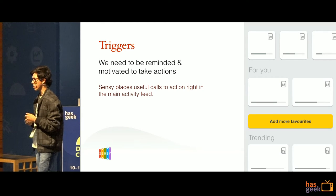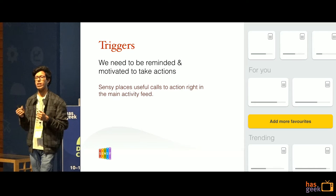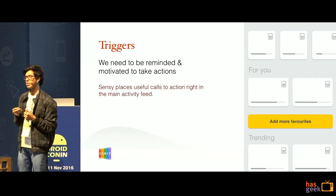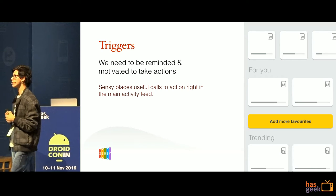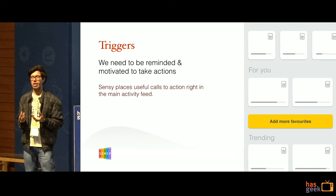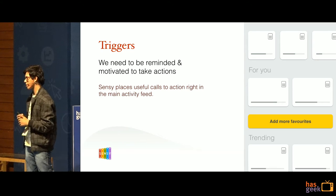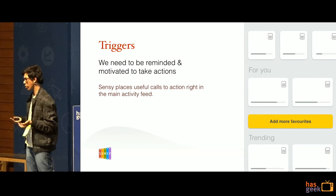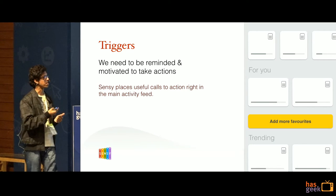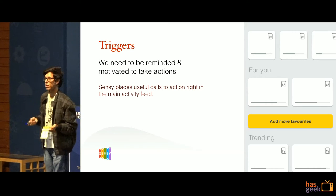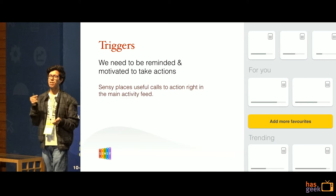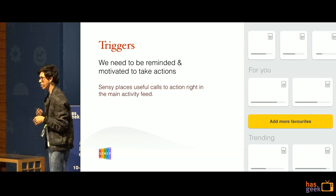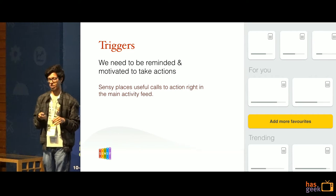Coming to important actions: users might not always know they need to do specific things. Small nudges saying 'you might want to do this action — it's going to be helpful' go a long way toward getting them to do what you want. For example, if personalization doesn't work well with very low data, you can have an unobtrusive button in the feed saying: if you personalize more, this app will work a lot better for you. Being in the main activity, which people see every day, means it gets a lot of attention and higher odds of action.